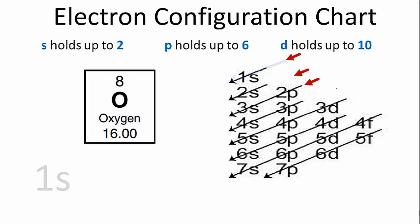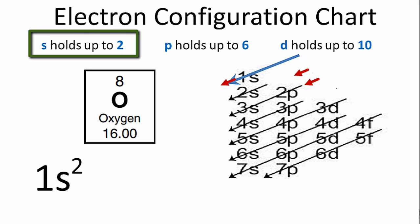We'll start in the first row, and as we go down, we have 1s. S orbitals can hold up to 2 electrons, so we'll put a 2 after the 1s.